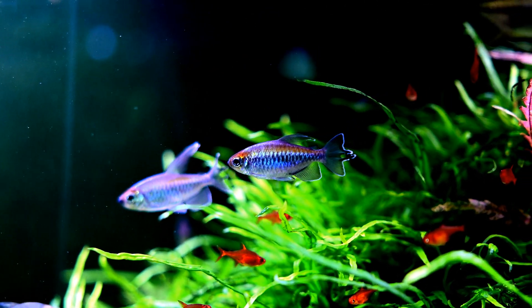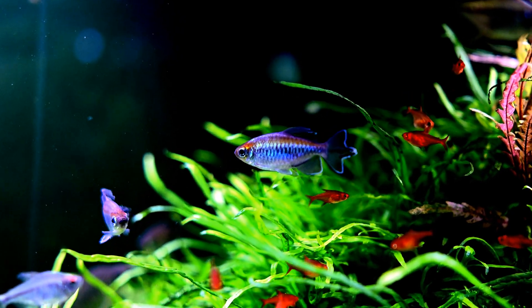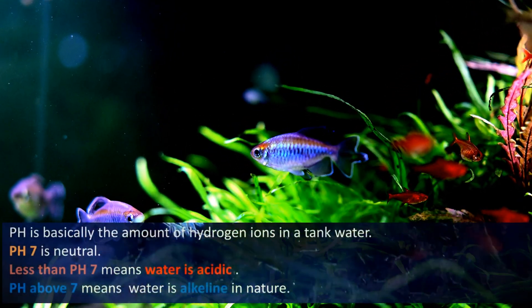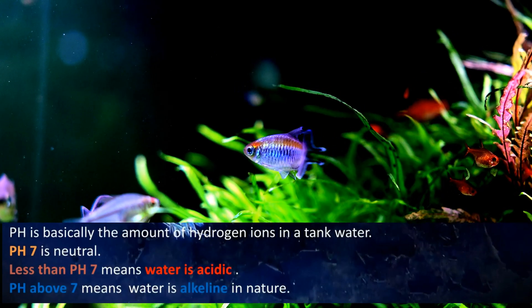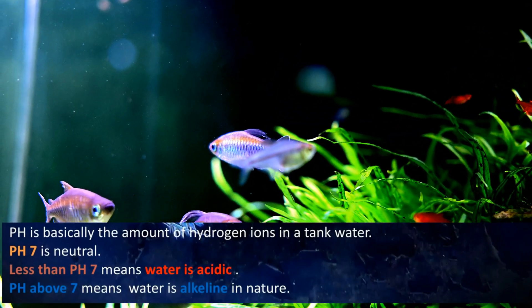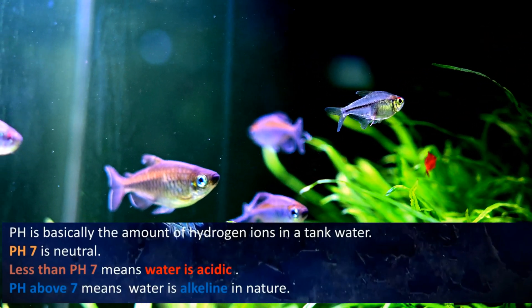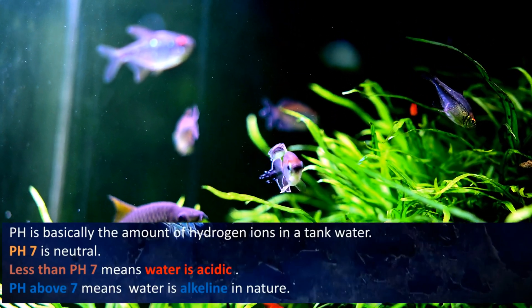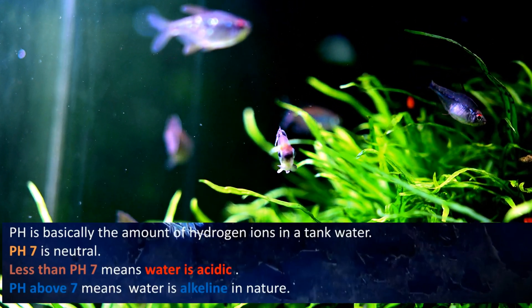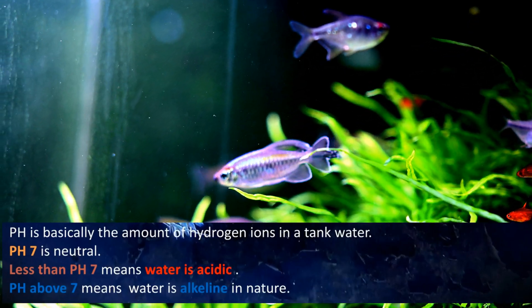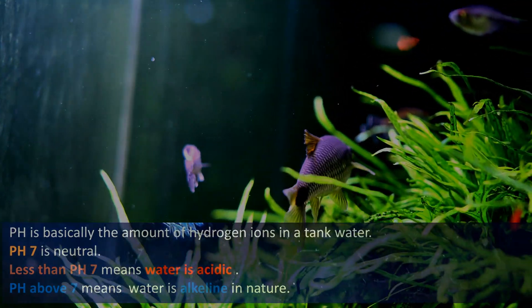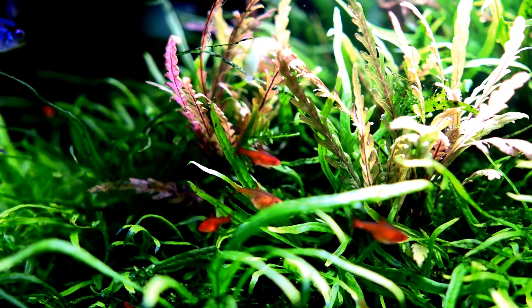A quick note if you are not aware: pH is nothing but the measurement of hydrogen ions present in a water solution. If your pH is less than 7 then your water is acidic. If it is 7 then your water is neutral. If it is more than 7 then it is alkaline in nature.